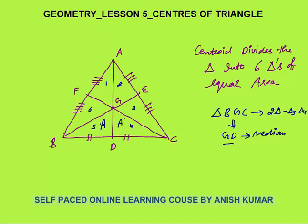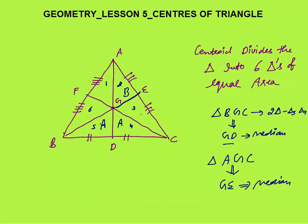Similarly, GE is also a median. Taking triangle AGC, GE is the median, so it divides it into two triangles of equal area — each has area b. And GF is the median of triangle AGB, so that also divides it into two equal triangles, each with area c.